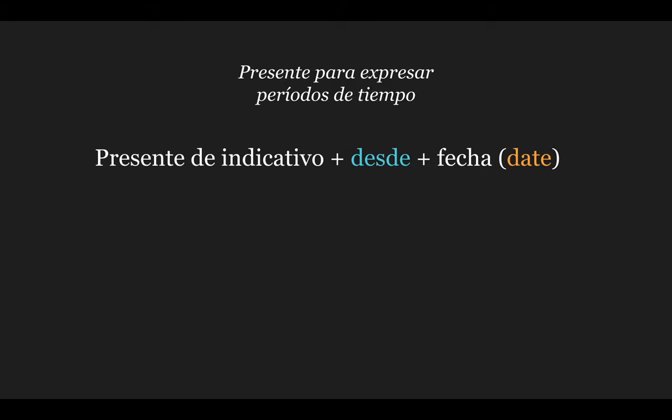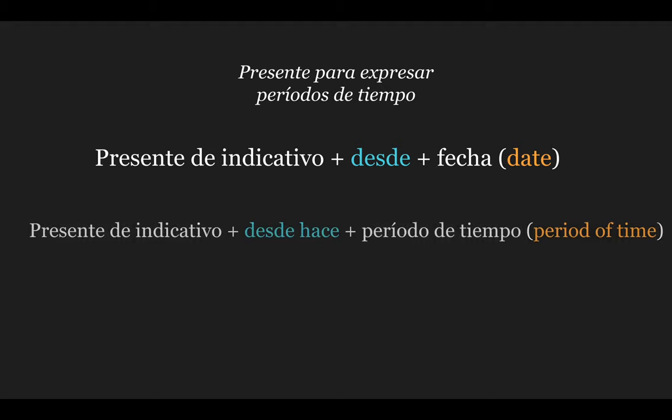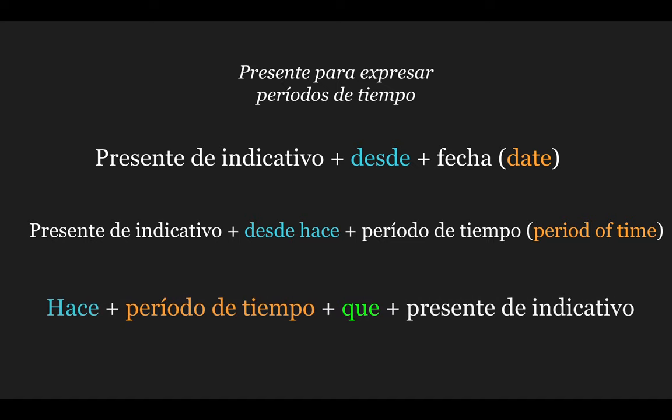In this video, we have covered how to express periods of time using the present indicative tense in Spanish, specifically using three formulas. The first formula was: presente de indicativo + desde + fecha. The second formula was: presente de indicativo + desde hace + período de tiempo. The last formula was: hace + período de tiempo + que + presente de indicativo. Remember these three formulas to use whenever you need them in the future.